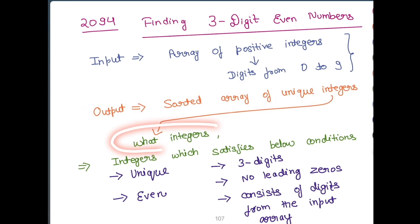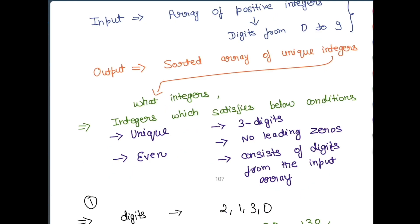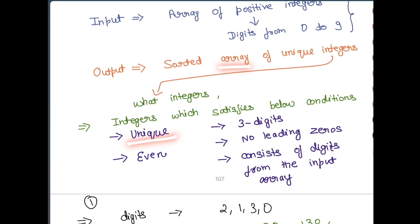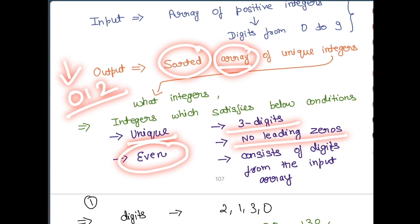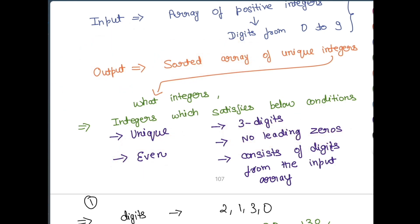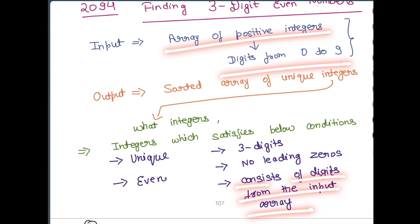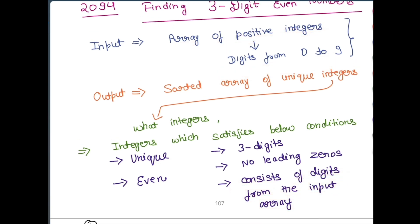The core of the question is understanding what integers we need to create and return in the sorted array. You need to create all integers satisfying these conditions: the integers should be unique, the array should be sorted, the integers should be even and of three digits, they should not have any leading zeros — for example, 012 is not valid because it's actually the two-digit number 12 — and the integers must consist of digits from the input array.